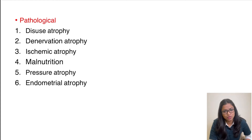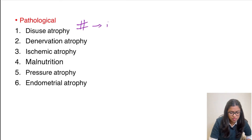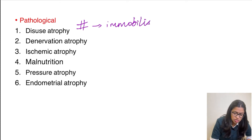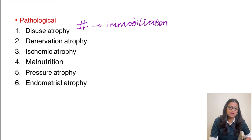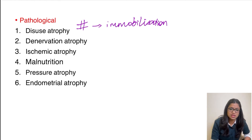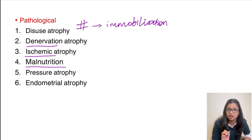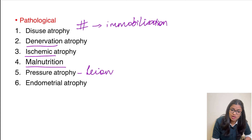For pathological examples: anything not being put into use will undergo atrophy. A patient with a fracture who is immobilized will have their calf muscles undergo disuse atrophy. Similarly, when a muscle's nerve supply, blood supply, or nutrient supply is cut off or compromised, it undergoes atrophy — called denervation atrophy, ischemic atrophy, and malnutrition atrophy respectively.